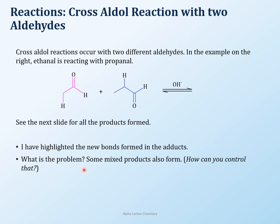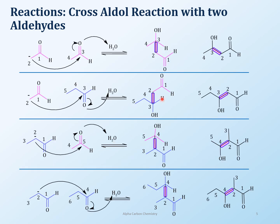The question I'd like you to think about is how you can control this kind of reaction. If you have acetaldehyde and propanol reacting, at one time the ethanal will produce the nucleophile, at another time the propanal will form the nucleophile. Ethanal can react with ethanal, ethanal can react with propanal, propanal can react with ethanal, or propanal can react with propanal.